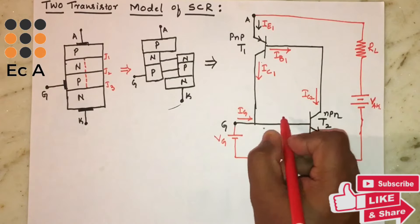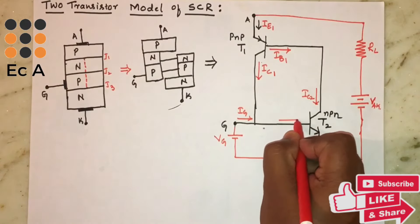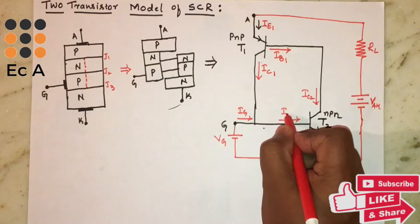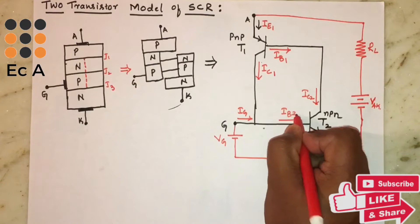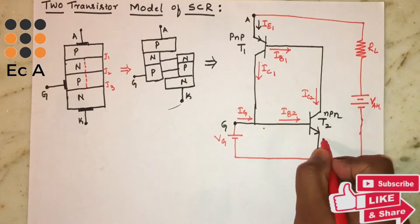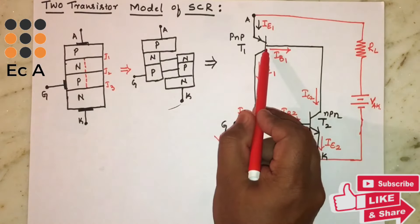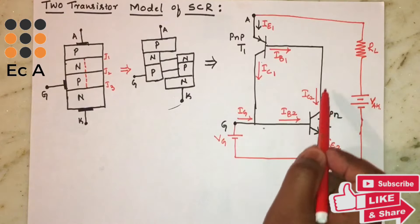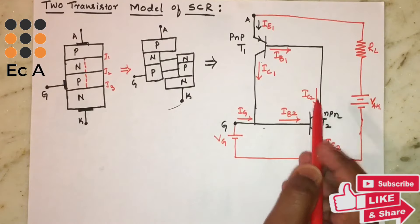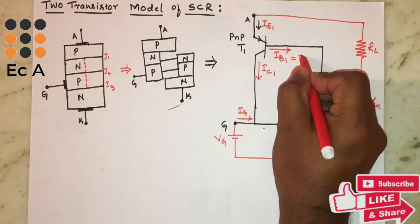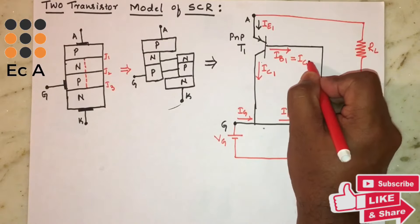The same current will flow through the base of transistor T2, called IB2, and this is the emitter current IE2. Here you can observe that the base of T1 is connected to the collector of T2, so IB1 will be the same as IC2.